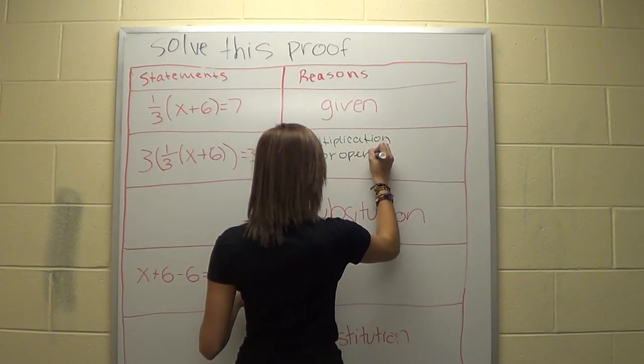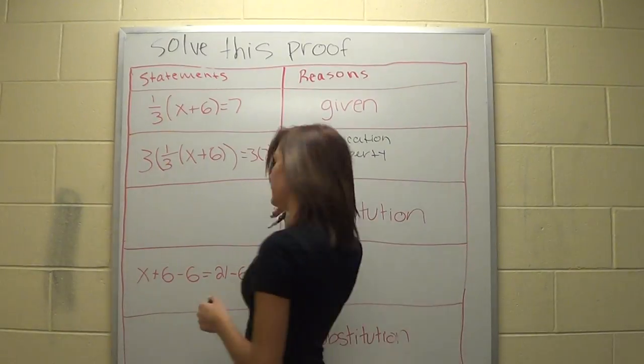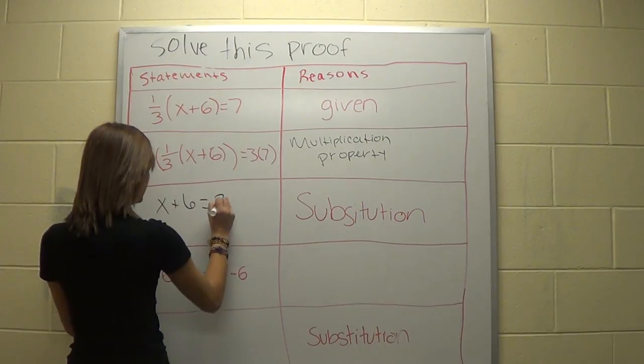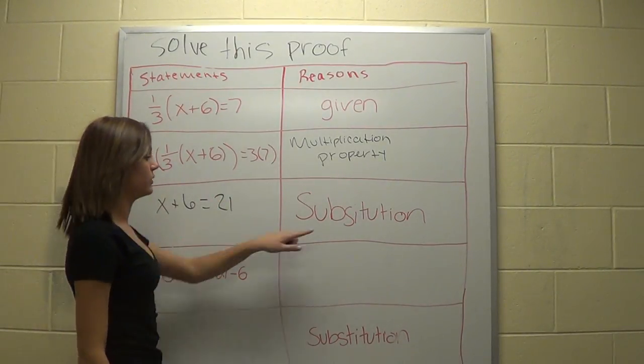And then, after we write that down on the side with the reasons, we have to solve it. So then that equals x plus 6 equals 21. And because we're just writing what that equals, we write substitution.